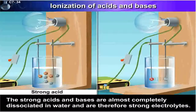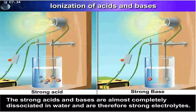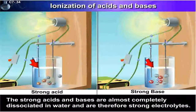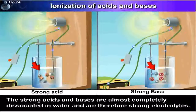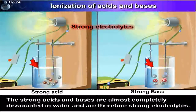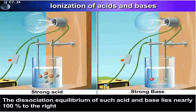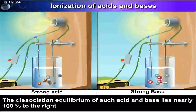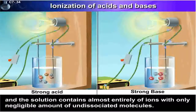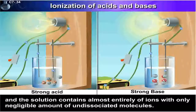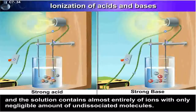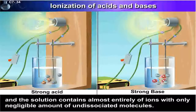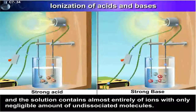The strong acids and bases are almost completely dissociated in water, and are therefore strong electrolytes. The dissociation equilibrium of such acids and bases lies nearly one hundred percent to the right, and the solution contains almost entirely ions, with only a negligible amount of undissociated molecules.